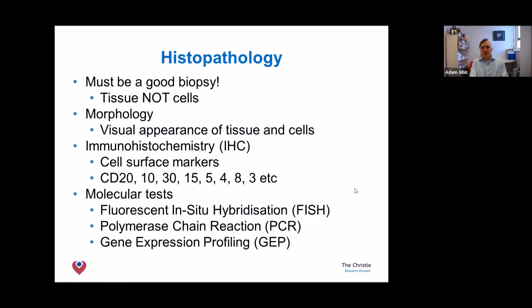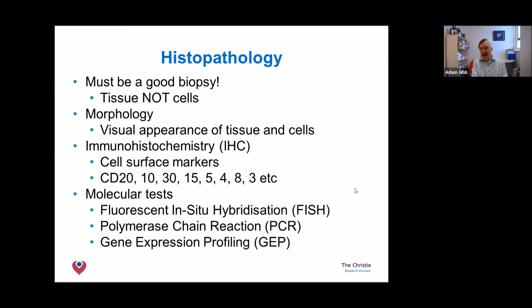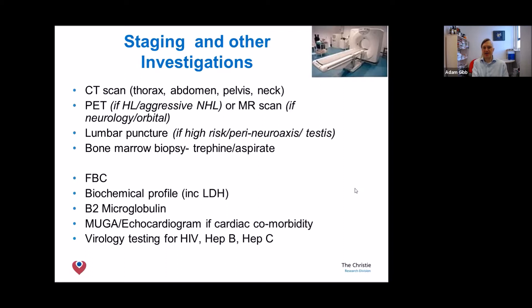The better and bigger the biopsy, the easier it is for the histopathologist to give an accurate diagnosis. With over 70 types of lymphoma it can be hard to tease them apart. Doctors in the laboratory look at cell morphology under the microscope and apply special stains — immunohistochemistry — marking for selected markers like CD20 and CD30. Increasingly, we also do DNA and RNA analysis. We then stage patients using CT or PET scanners, and sometimes a lumbar puncture and bone marrow biopsy.